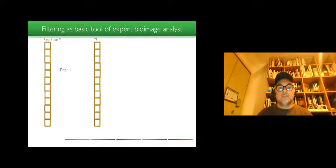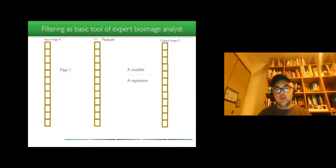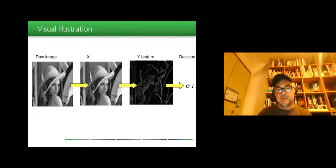When we have a problem, what we usually do is we have an input image, we can take a filter to enhance some elements in the image, and then we put a classifier or regression. In our case we will take only a classifier to produce an output image on which the final information can be extracted. A visual illustration is that first you have your raw images. It's important to keep in mind that in the old school era and in the machine learning era, denoising is still very important and can be done with machine learning but can also be done with standard methods.